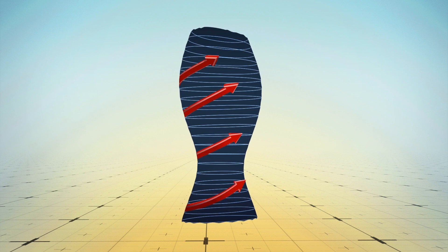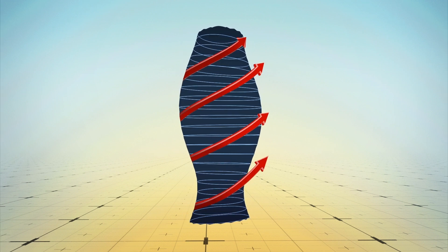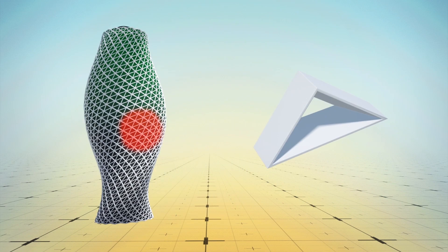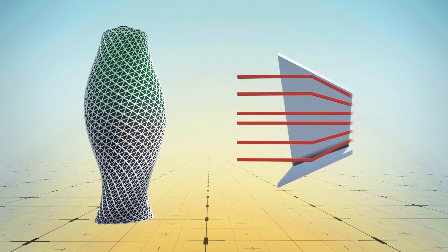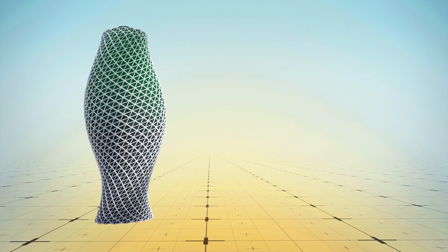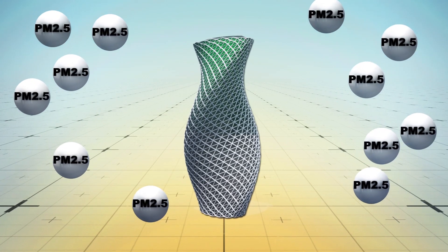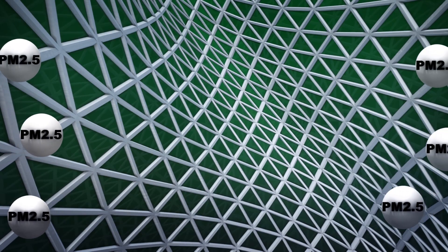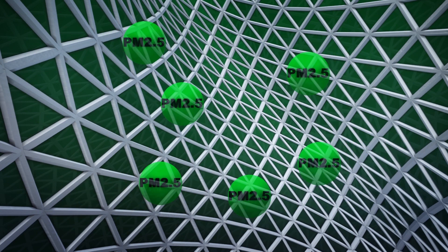According to Design Boom, the structure's aerodynamic designs include spiraling contours that draw in polluted air and expel clean-filtered air. The pressure differentials enable the tower to pull PM2.5 particles into its internal filtering chamber.